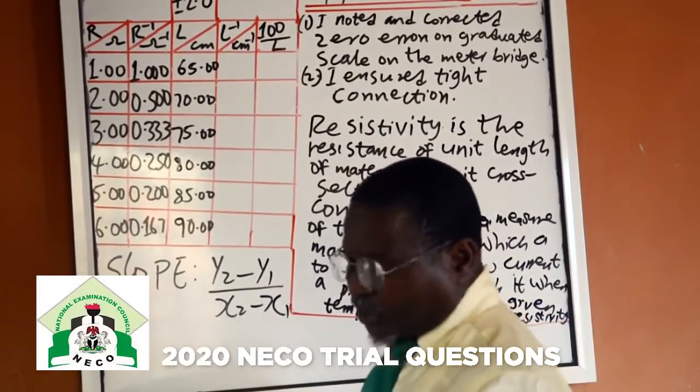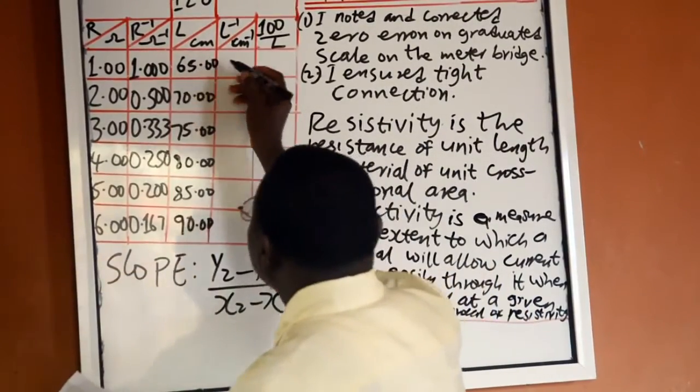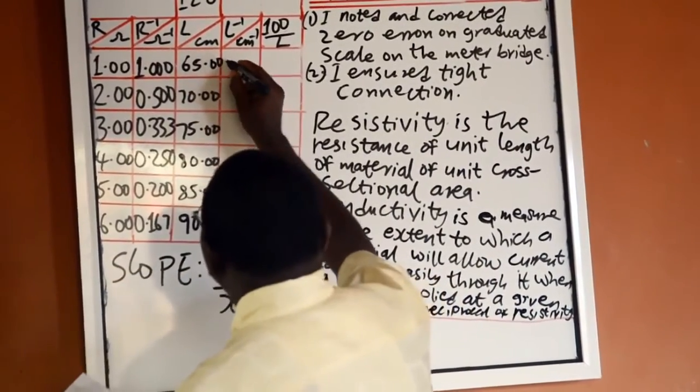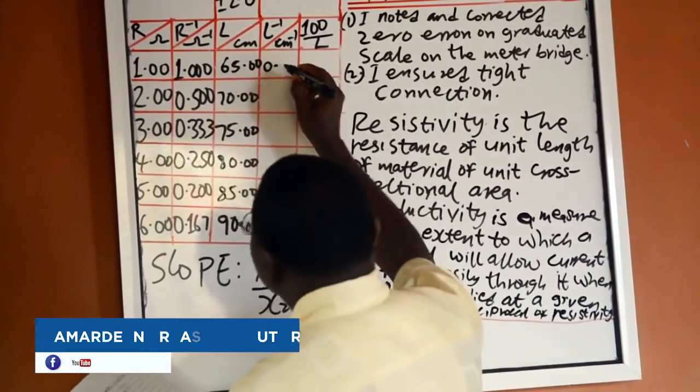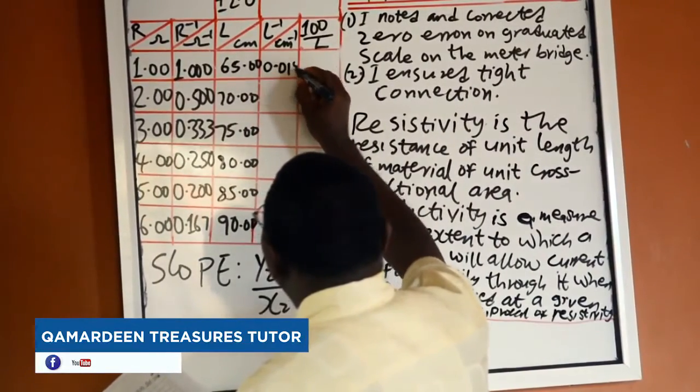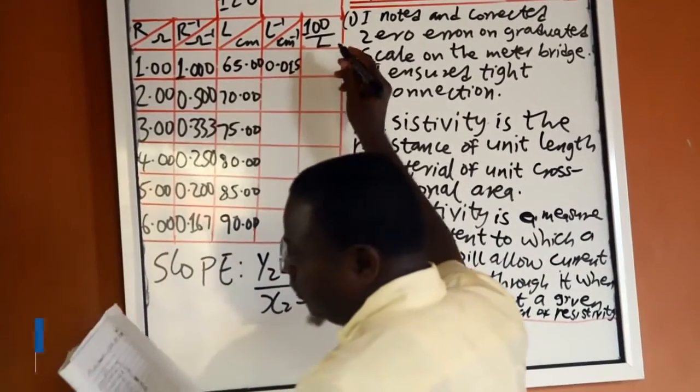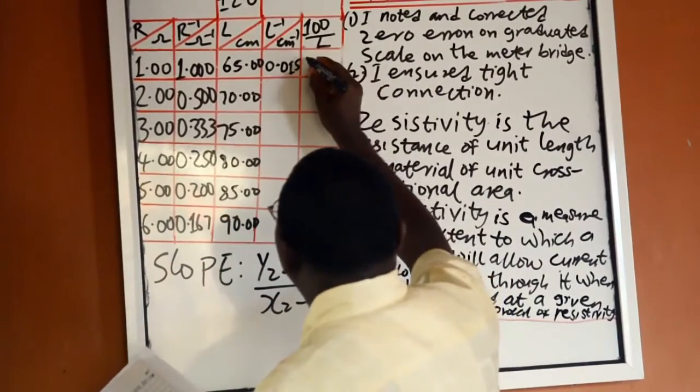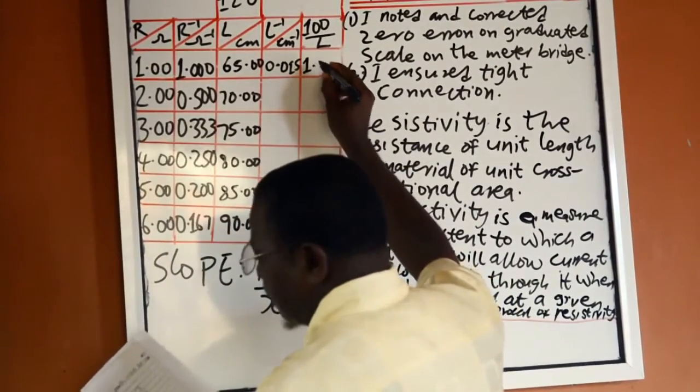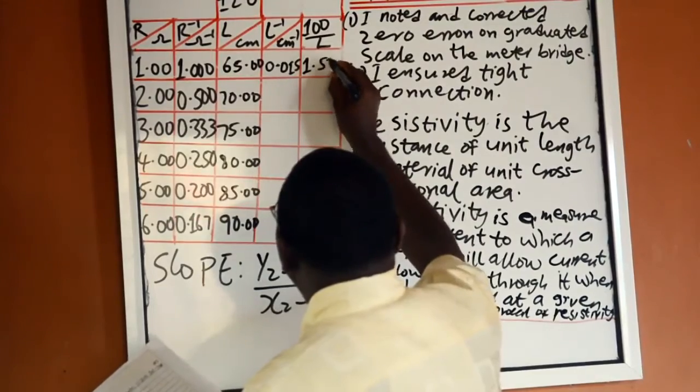Now I want to slot in the values of L in parts. 1 over 65 is equal to 0.015, and 100 over 65 is equal to 1.538.